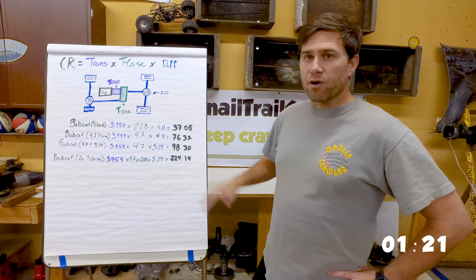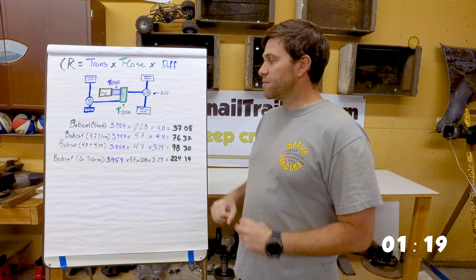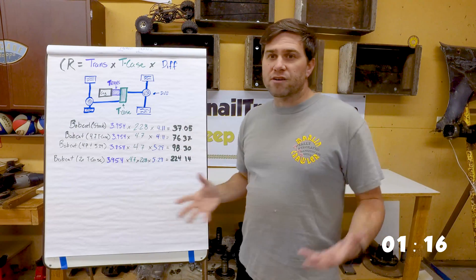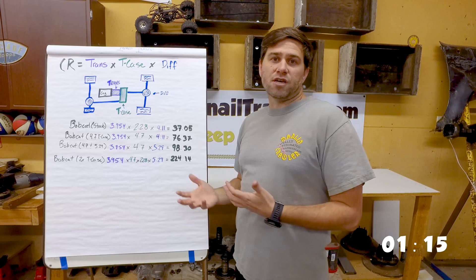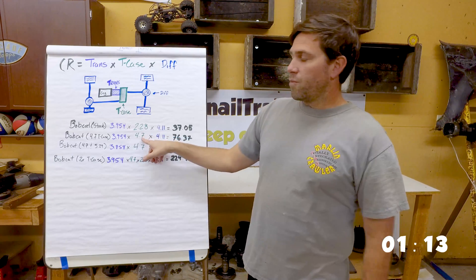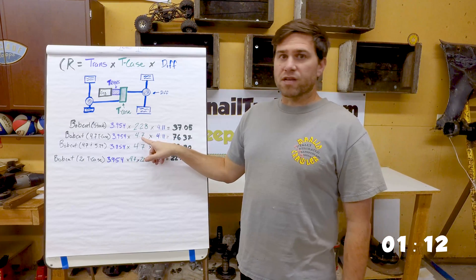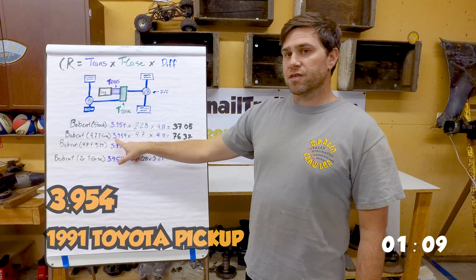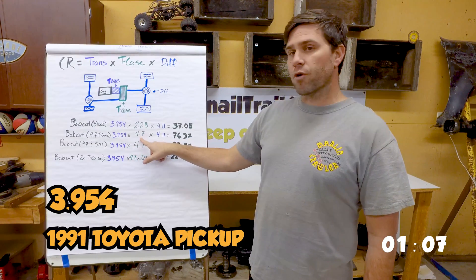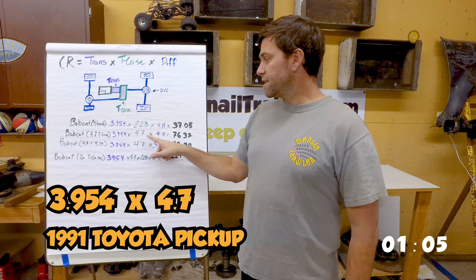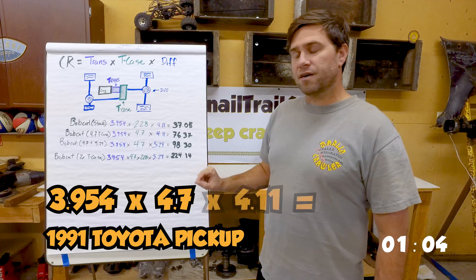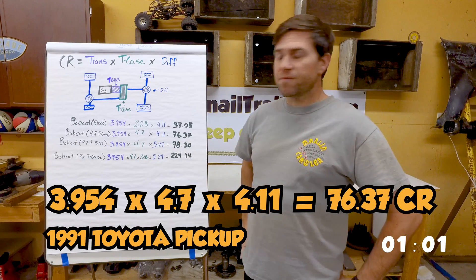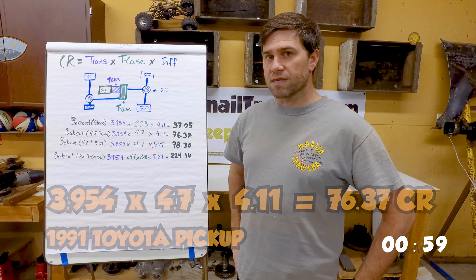So how does that work when we break it down and change some different aspects? If we don't change the tire size, so we're not going to be changing the diff, and we want to get lower, we can change the gearing in the t-case. If we're using the stock transmission times a 4.7 gear in the t-case with the stock differential, now we could bump ourselves up to 76.37.